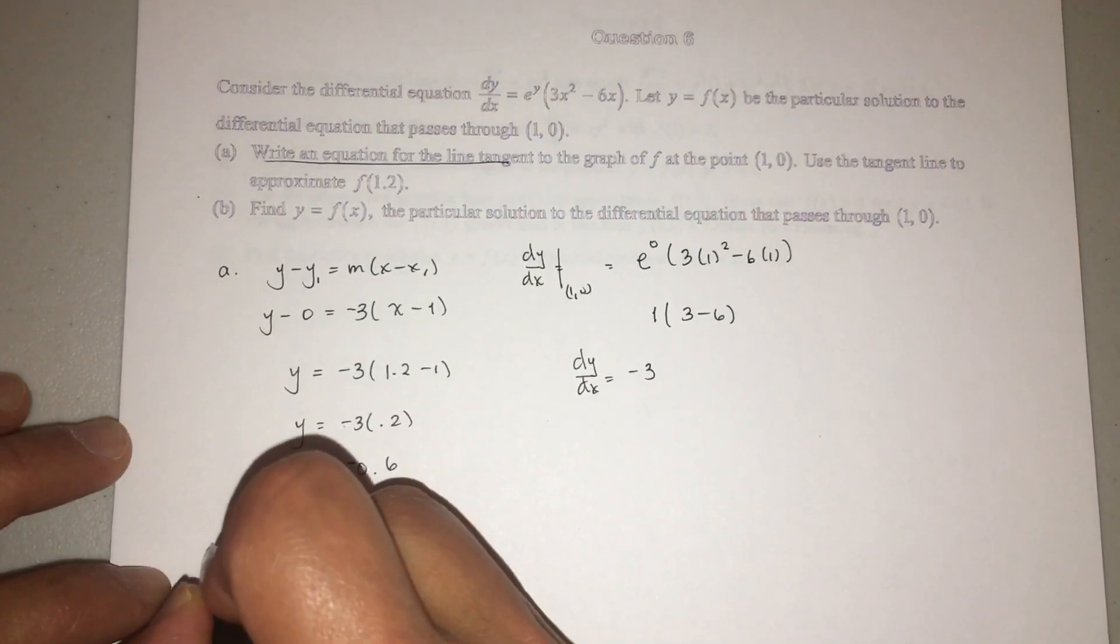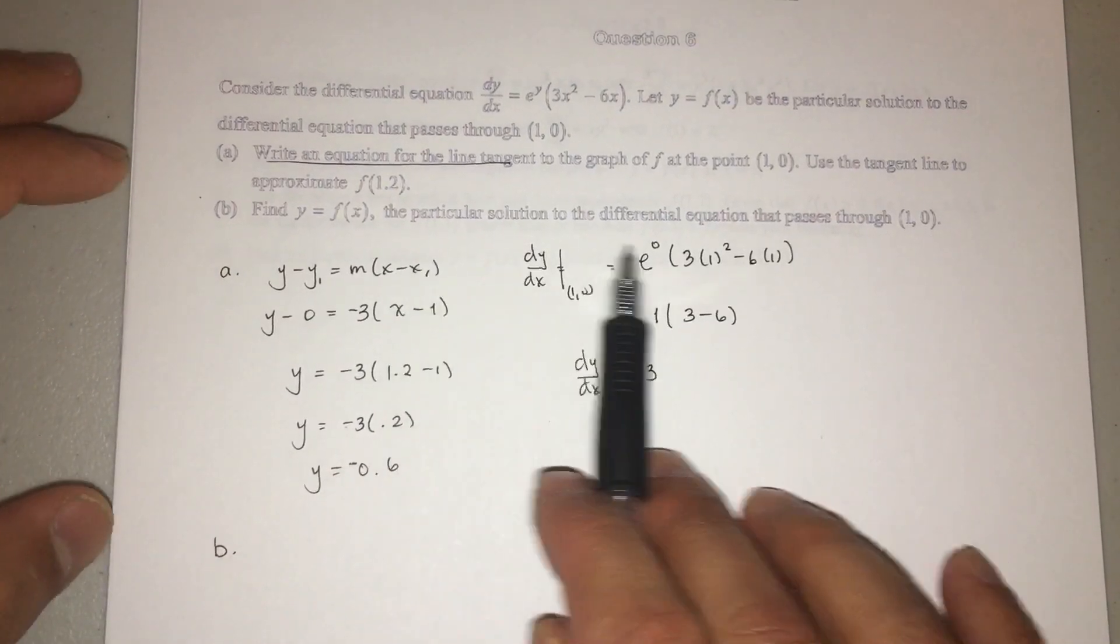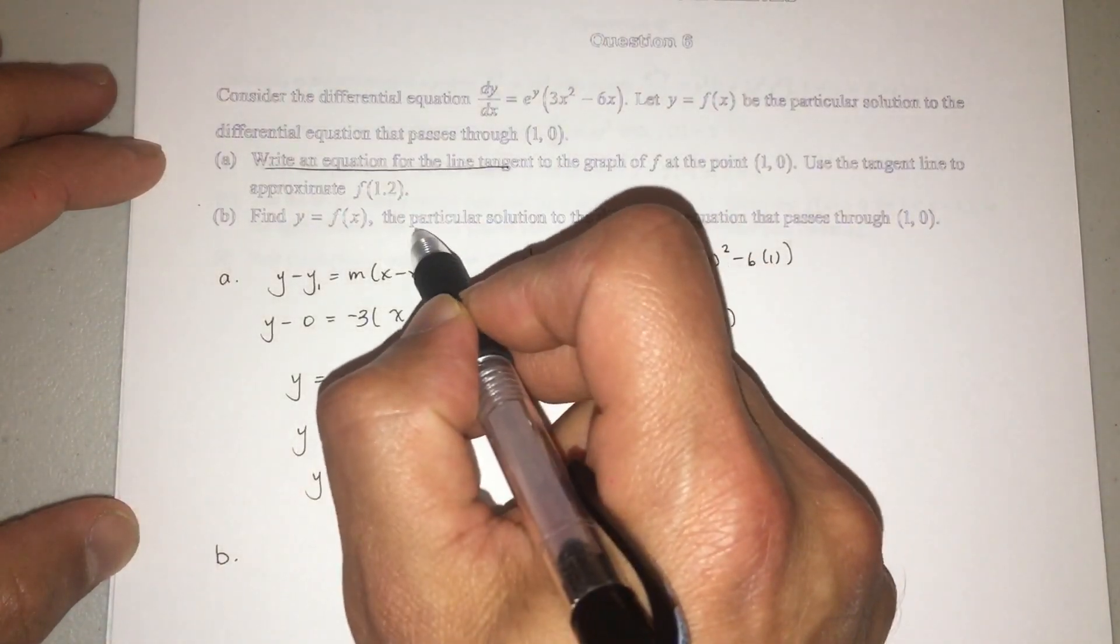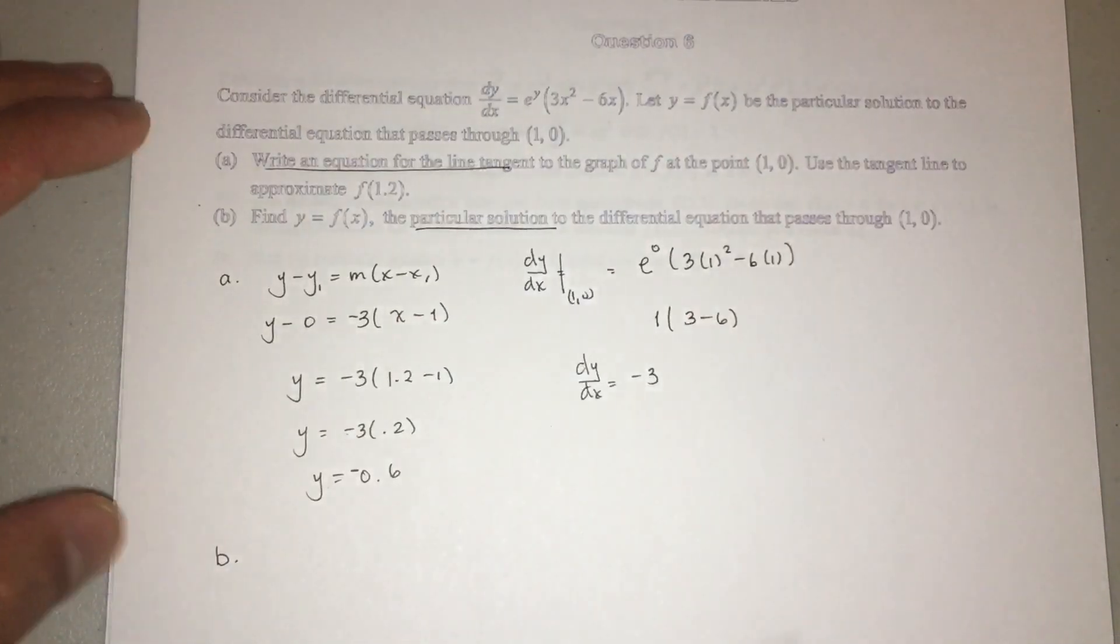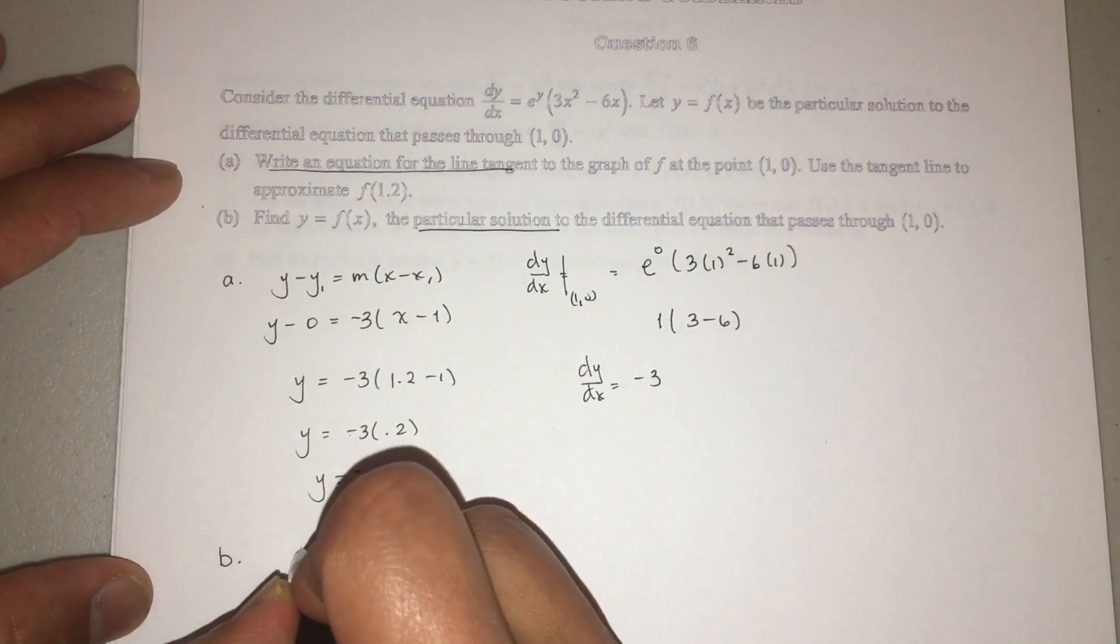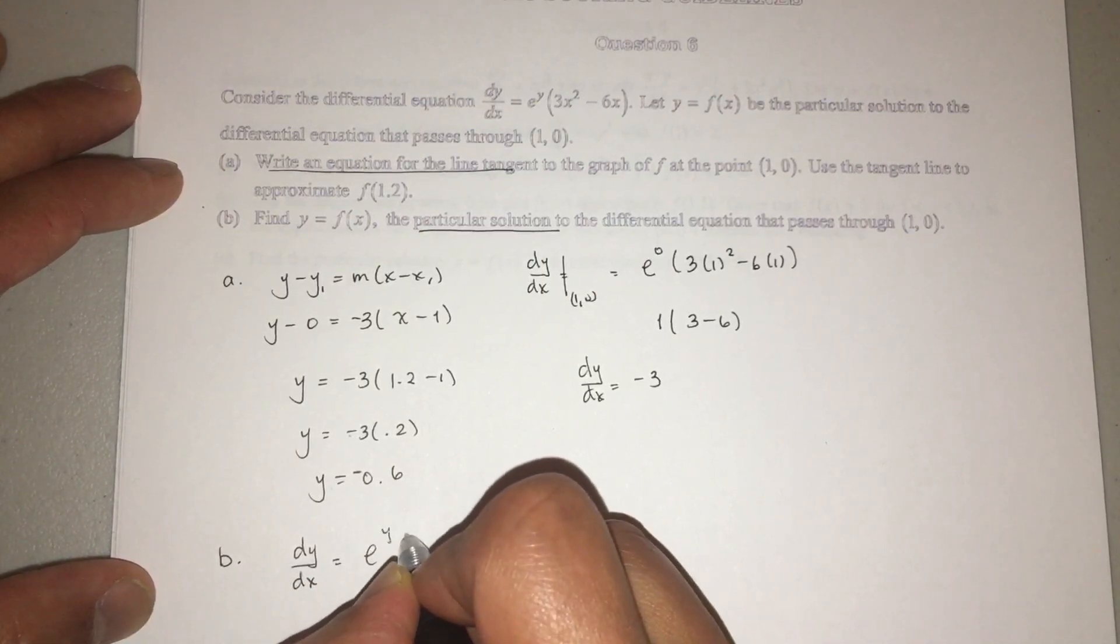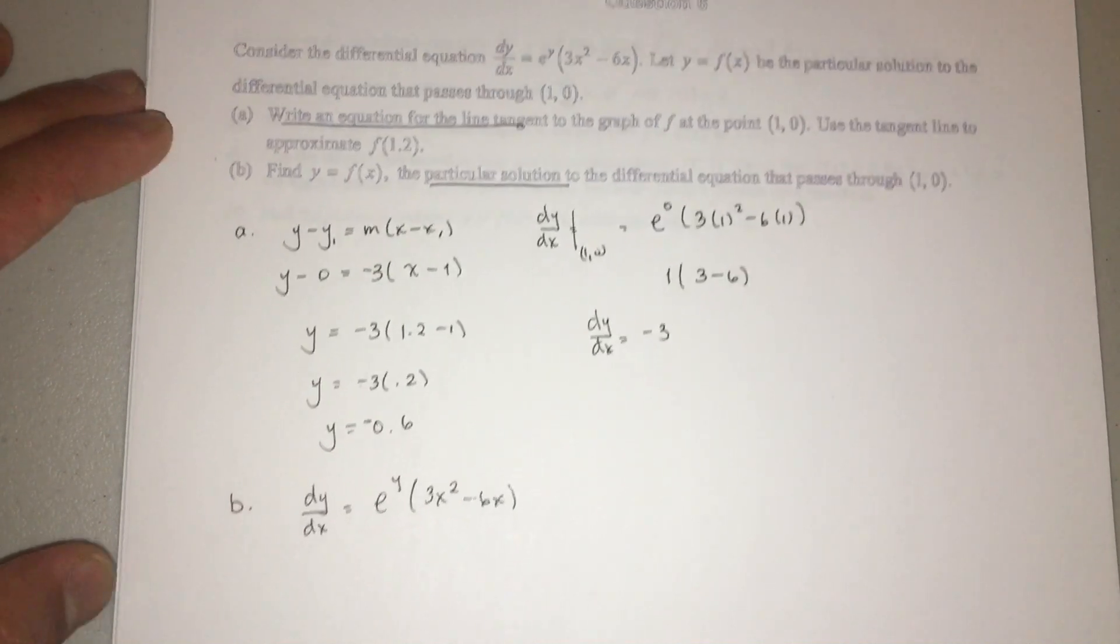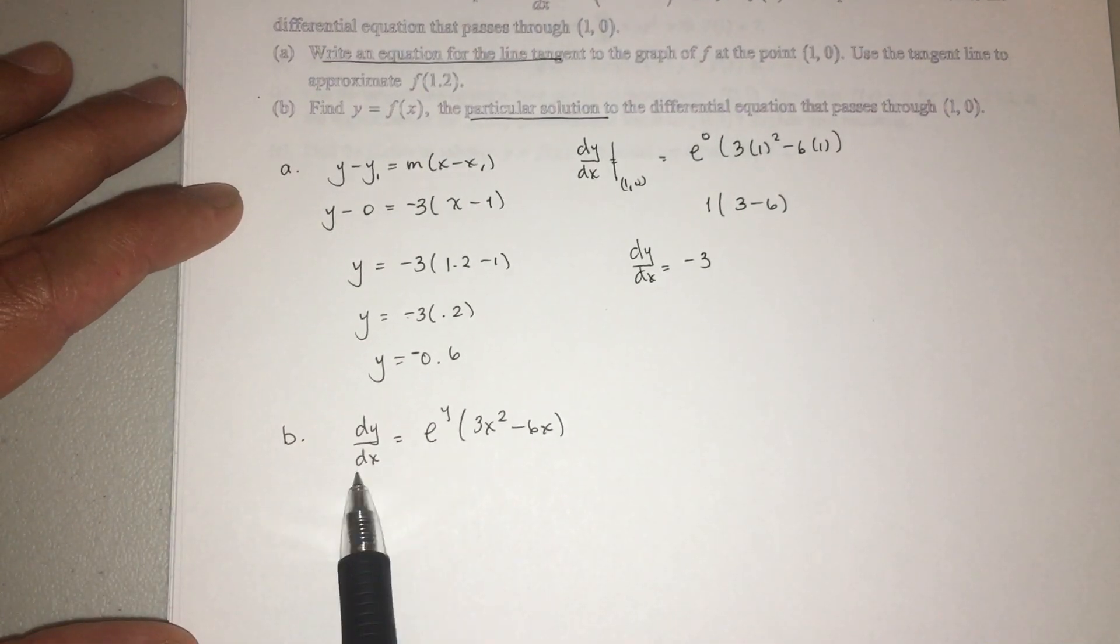And believe it or not, this last part, part B, would give you 6 points. It says find a particular solution to the differential equation that passes through (1,0). So the particular solution, notice that. So what do I have to do? I have to solve this guy, split him apart, and do my antiderivative. So dy/dx = e^y(3x^2 - 6x). Remember, you want to split him up. You want to split him up.